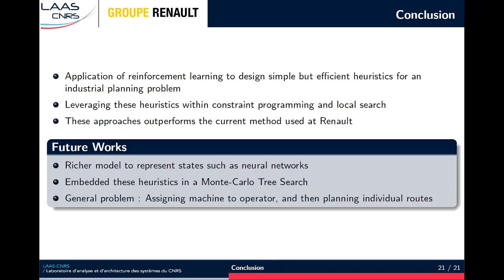To conclude, we proposed to use reinforcement learning to learn simple but efficient heuristics for a real planning problem proposed by Renault. Then we showed how to use these heuristics in three different methods that outperform the current solution used in the company. Now we want to try to use a richer model to abstract the state, like for example a neural network. And we would like to use these heuristics in a Monte Carlo tree search, because we think it would fit well with the problem as this method relies on many rollouts following a heuristic. Finally, this problem is in fact a sub-problem of a larger one, which is assigning the components to the operators and then planning the individual routes, and we would like to work on this general problem in the future. Thanks for watching this video and goodbye.